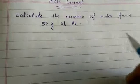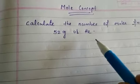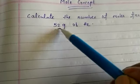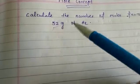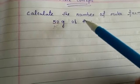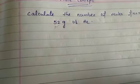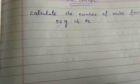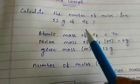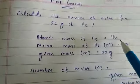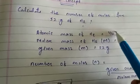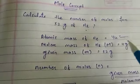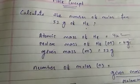The first example: calculate the number of moles for 52 grams of He (helium). We will find the mole from the mass. Mass is given as 52 grams of He. The atomic mass of helium is 4u, so the molar mass will be 4g. I told you in the previous class that only the units change and the numerical value remains the same.